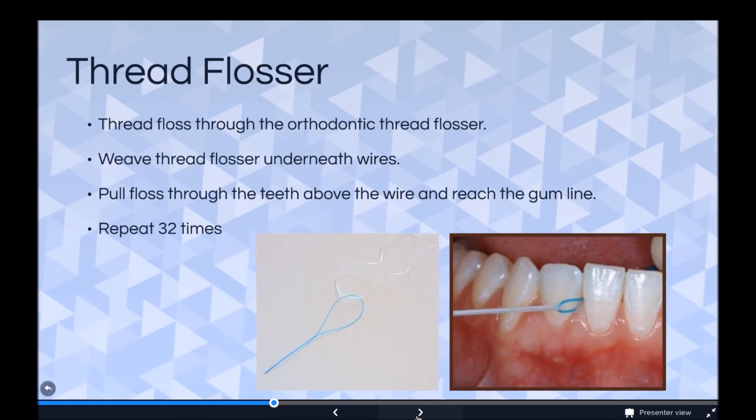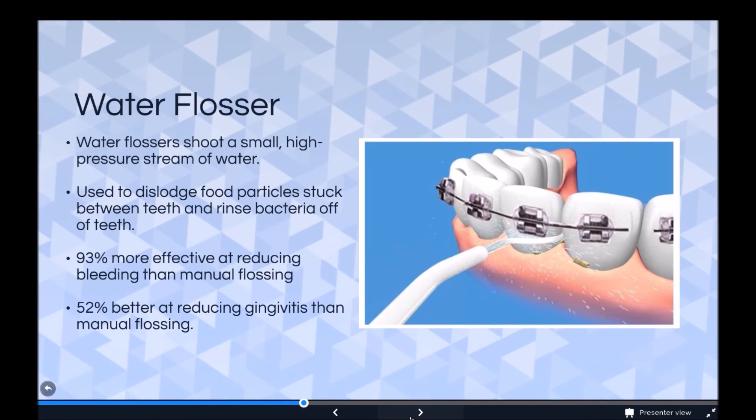Thread flosser: thread floss through the orthodontic thread flosser, weave thread flosser underneath wires, pull floss through the teeth above the wire and reach the gum line and repeat 32 times.